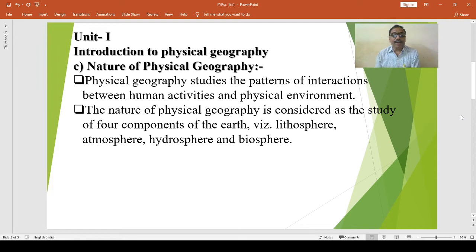There is a trifurcation of geography into physical geography, human geography, and biological geography. About the nature of physical geography, physical geography studies the patterns of interactions between human activities and physical environment.